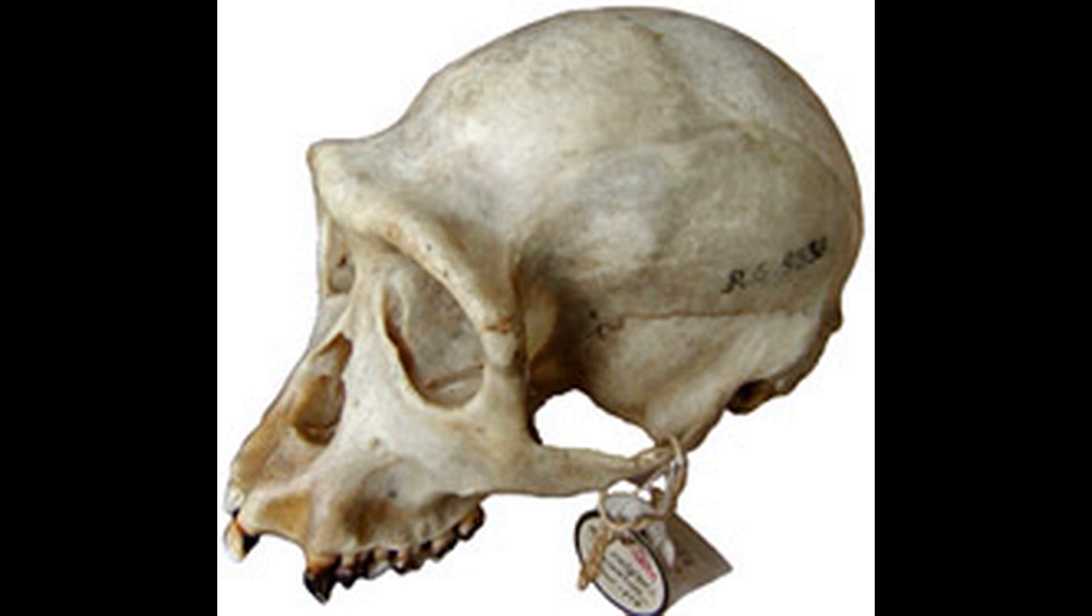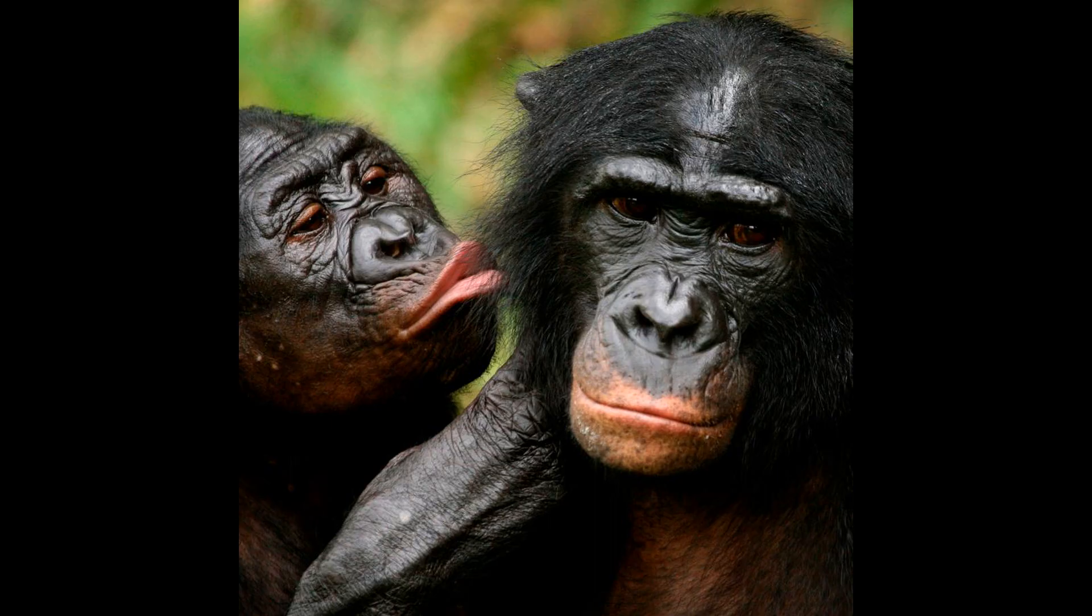Bonobos tend to have darker faces than chimps, longer legs, and long, parted hair on the head. They also differ substantially in behavior. Bonobos don't defend territories like chimps. Bonobos are more frugivorous, and bonobo sexual behavior is way different from chimps.